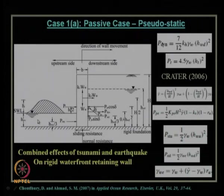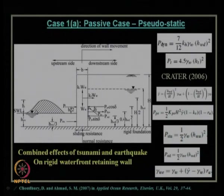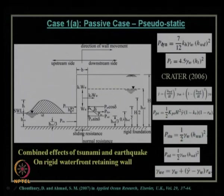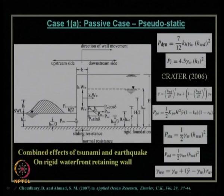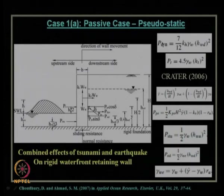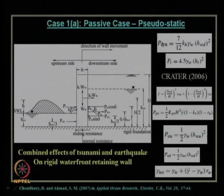When the tsunami comes, there is an extra height h_t on top of the still water level. The water pressure from the upstream side — from the static still water — is P_static_u, acting at a height of h_wu/3 since it is hydrostatic pressure. The tsunami pressure P_t acts on the wall at a height of h_t/2 from the sea water level. The direction of wall movement is toward the earth, confirming the passive state.